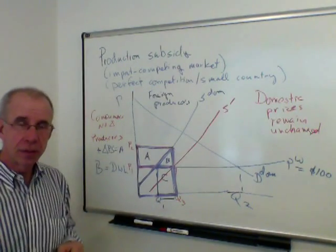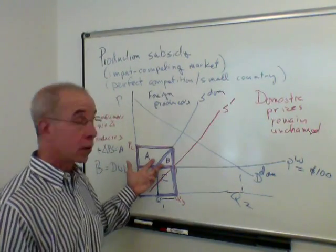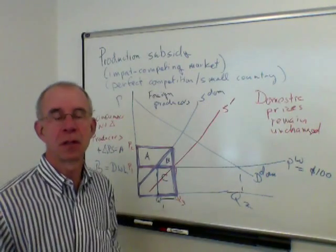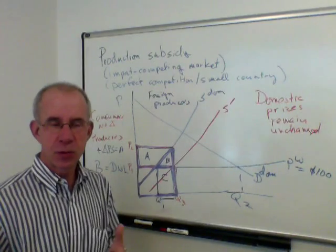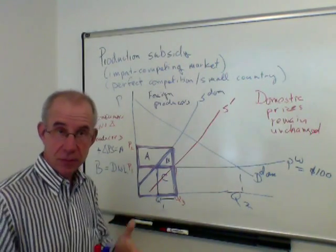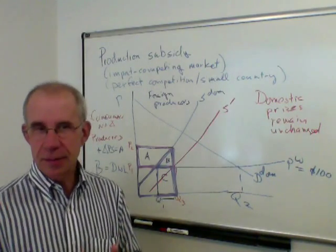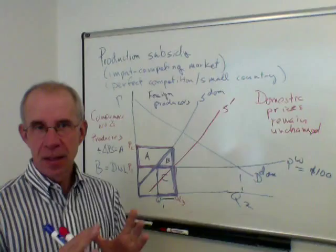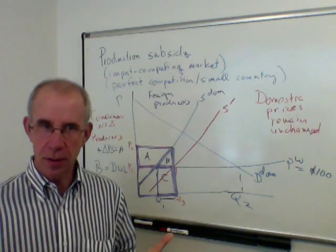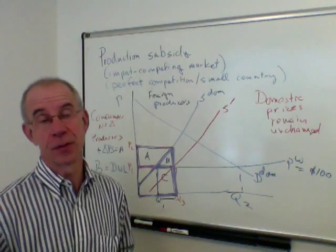The other aspect worth noting is that domestic production subsidies cost the government money, whereas tariffs raise money for the government — again, it's a transfer from consumers to the government. From a strictly government budgetary standpoint, there are some downsides to the production subsidy because it drains funds out of the government budget and sends them to a domestic industry. So from a narrow budgetary standpoint, the tariff raises money and the production subsidy costs money. But as economists, we try to think more broadly than just the narrow budgetary consequences for the government, and instead look at the overall impact on the economy as a whole.